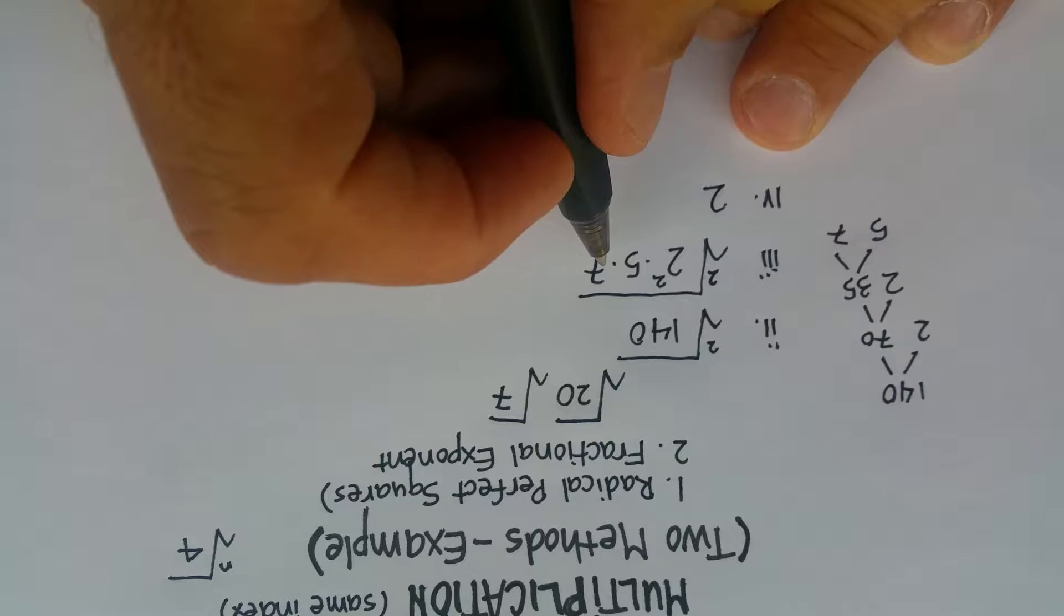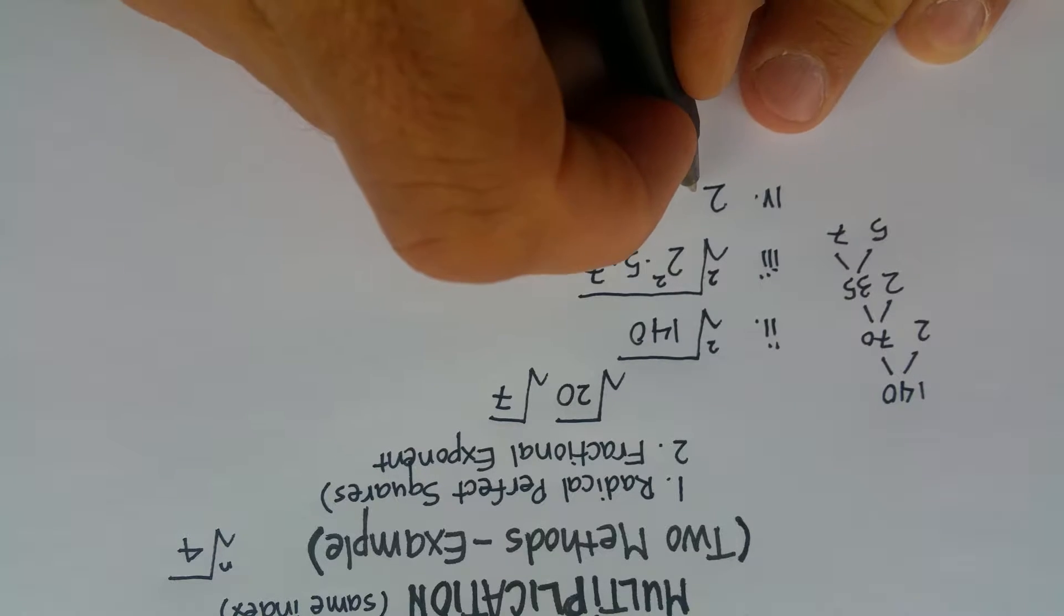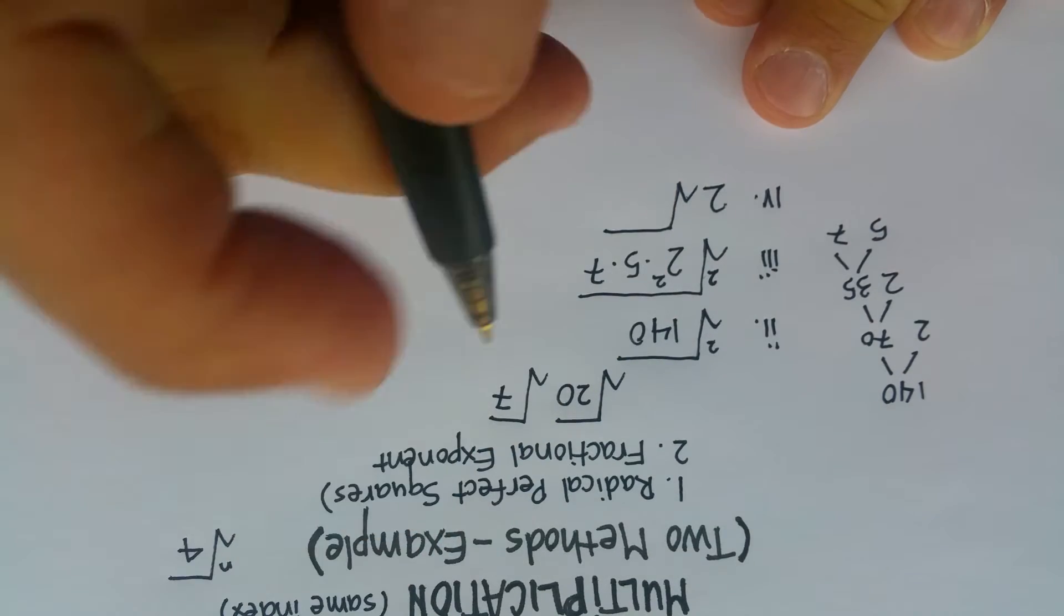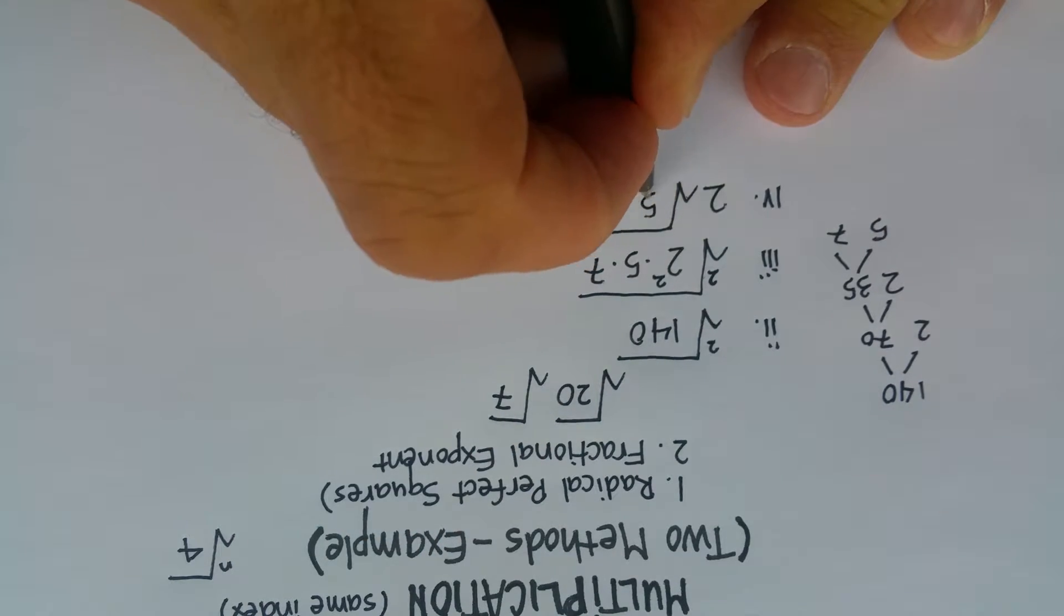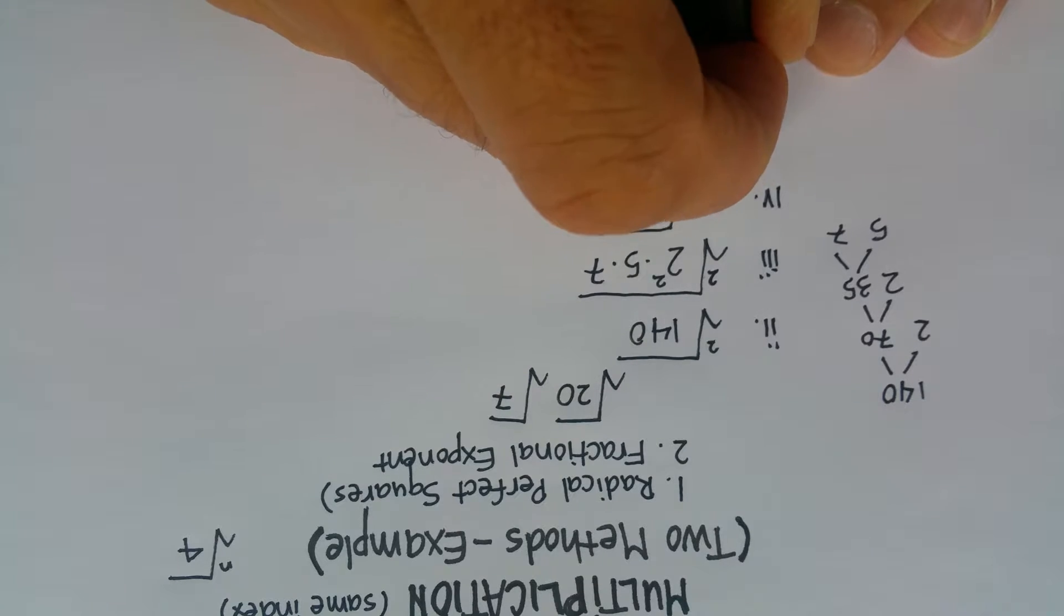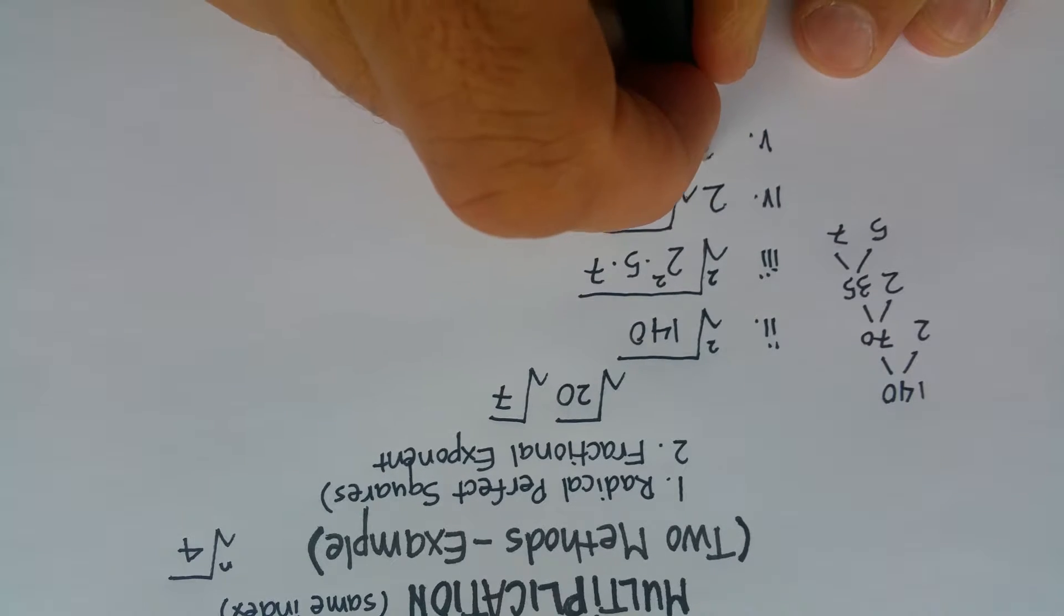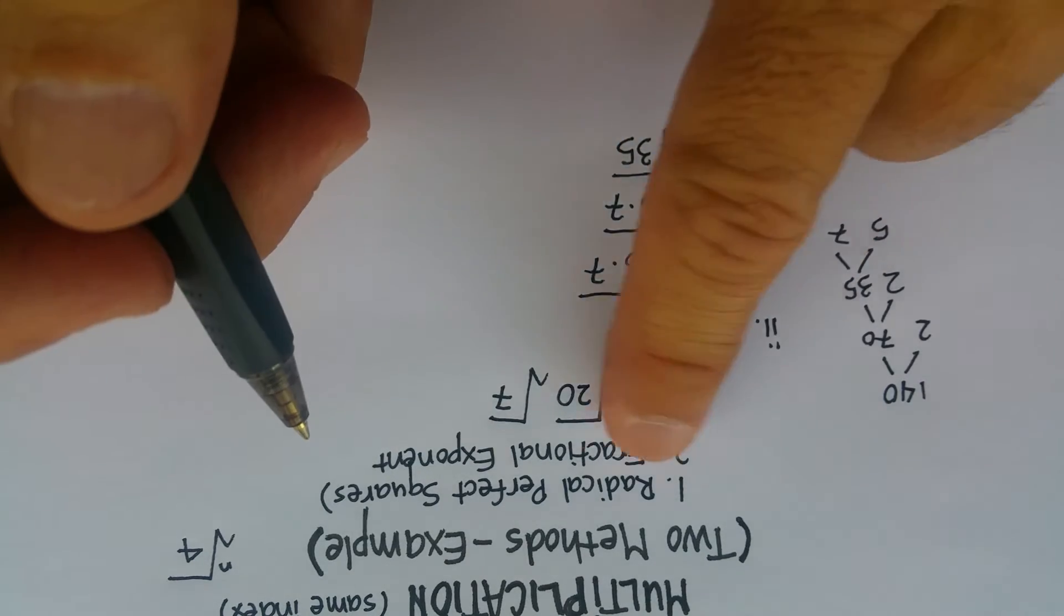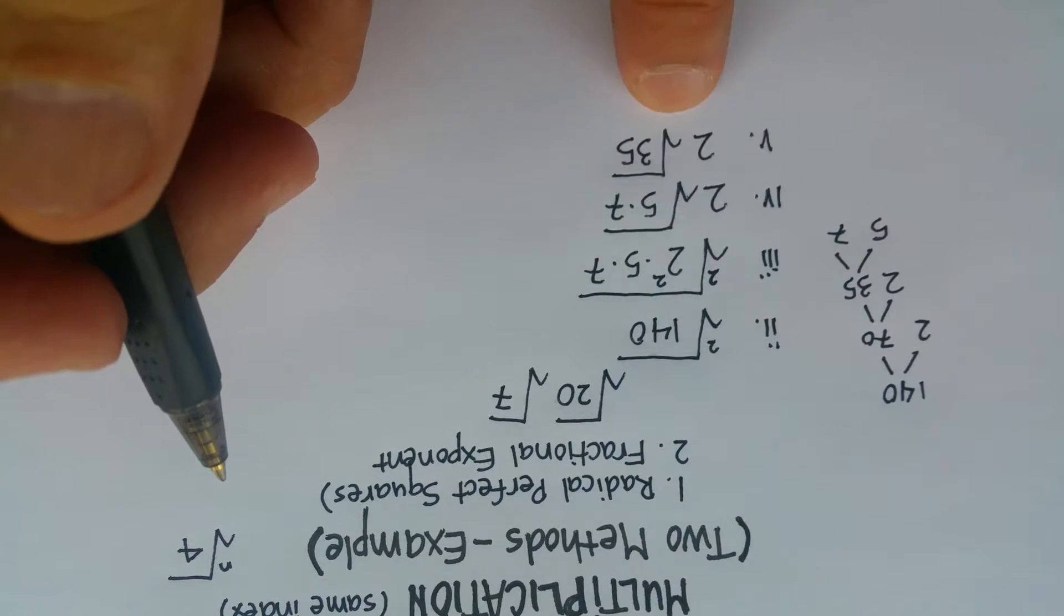These two, unfortunately, do not have a perfect square. So you're going to keep them back under the radical. At least you don't have a perfect square that's a whole number. So we're going to go 5 times 7, and the final answer there is just going to be 2 radical 35. So that's the perfect square method.